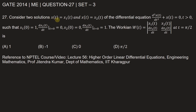Consider two solutions x1(t) and x2(t) of the differential equation d²x/dt² + x = 0, where t > 0, such that x1(0) = 1, dx1/dt at t=0 is 0, x2(0) = 0, and dx2/dt at t=0 is 1. The Wronskian W(t) given by this determinant at t = π/2 is what?